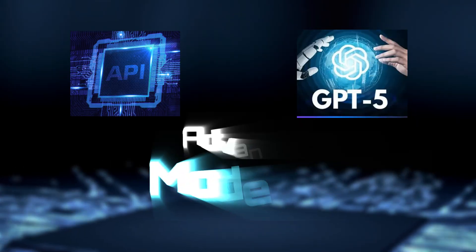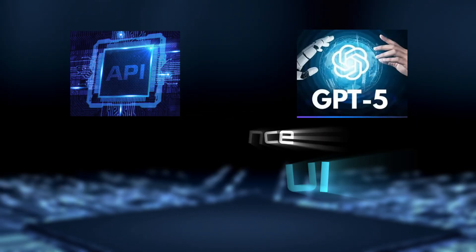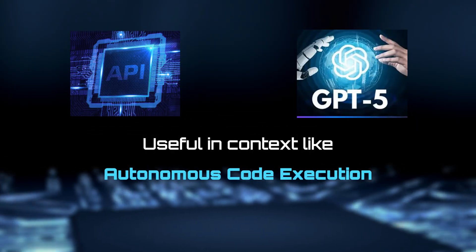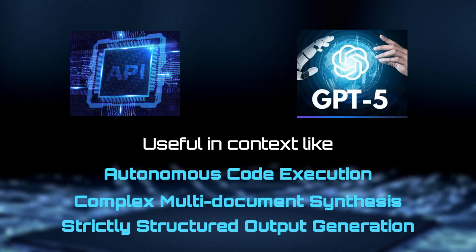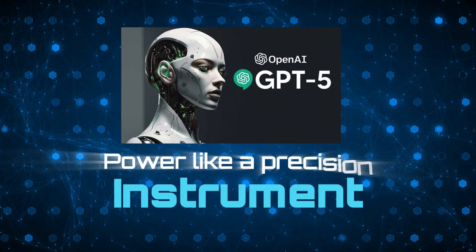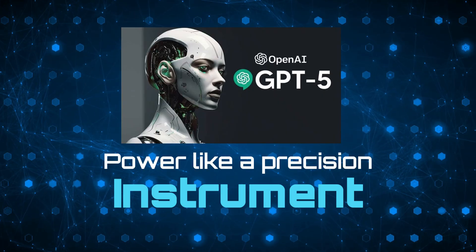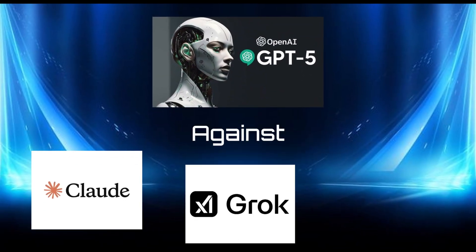This parameter is exposed through both the API and ChatGPT's advanced mode UI, and is especially useful in contexts like autonomous code execution, complex multi-document synthesis, and strictly structured output generation. So yes, GPT-5 lets you dial its thinking power like a precision instrument. But how will it fare against its real-world rivals?